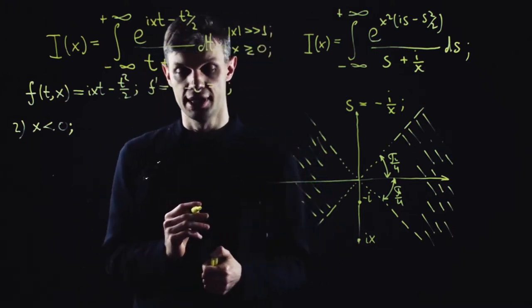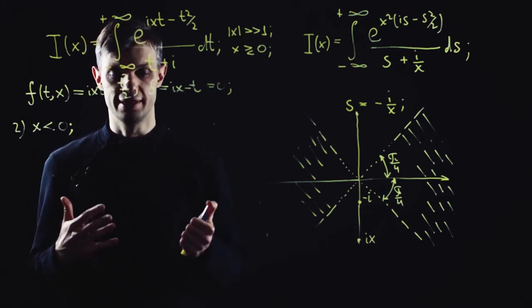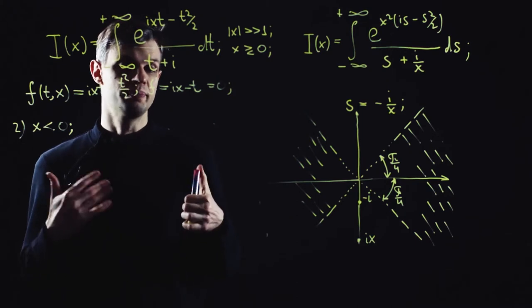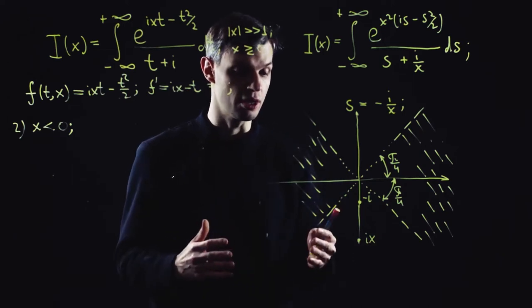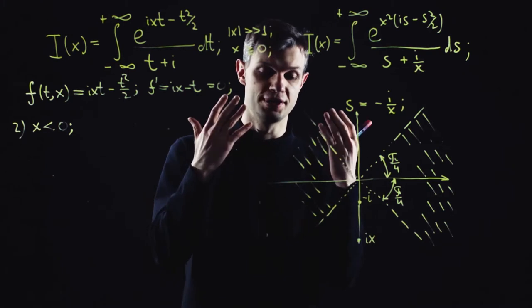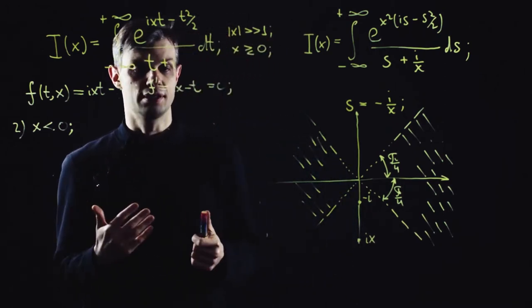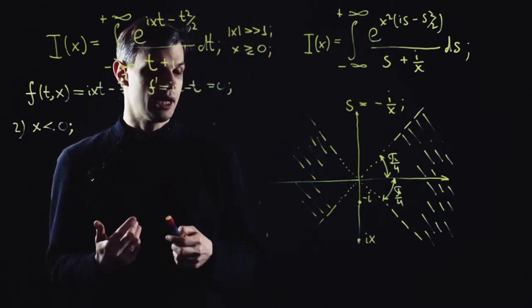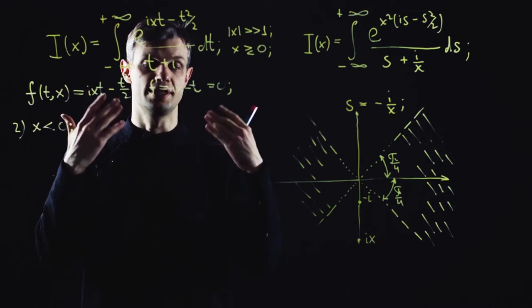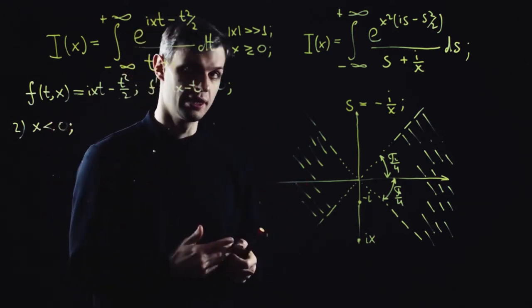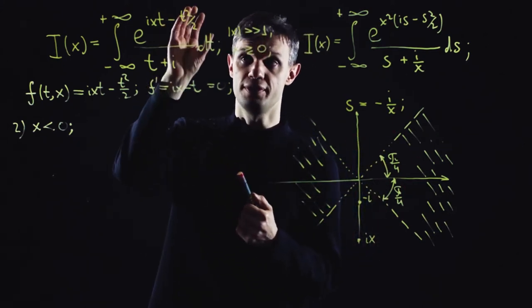To extract it, let's recall that our steepest descent technique was based on the local knowledge of the behavior of the exponent function. By local, I mean we only extracted the pattern near the saddle. But sometimes, especially in problems related to Stokes phenomenon, you need to know the global picture, namely the exact position of the stationary phase and steepest descent lines in the complex plane.